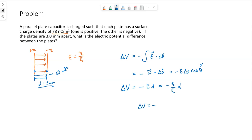So delta V: 78 nano, so 10 to the negative 9 coulombs per meter squared times D. I will want this in meters.